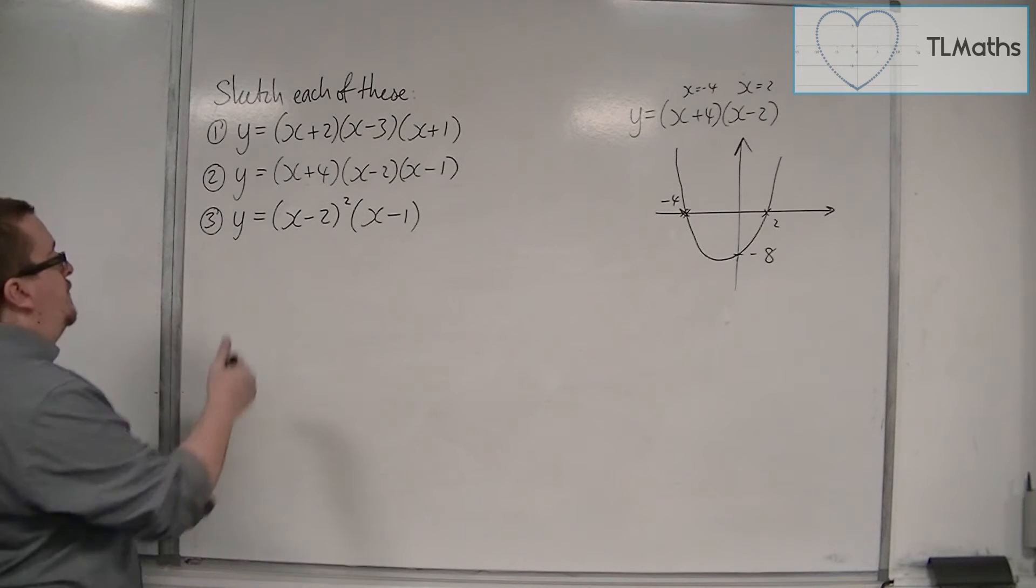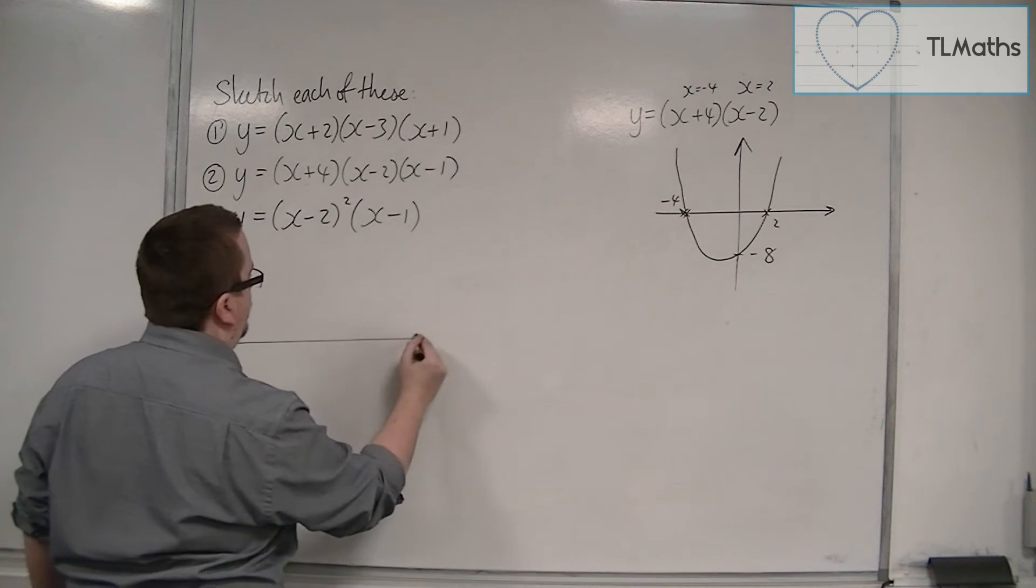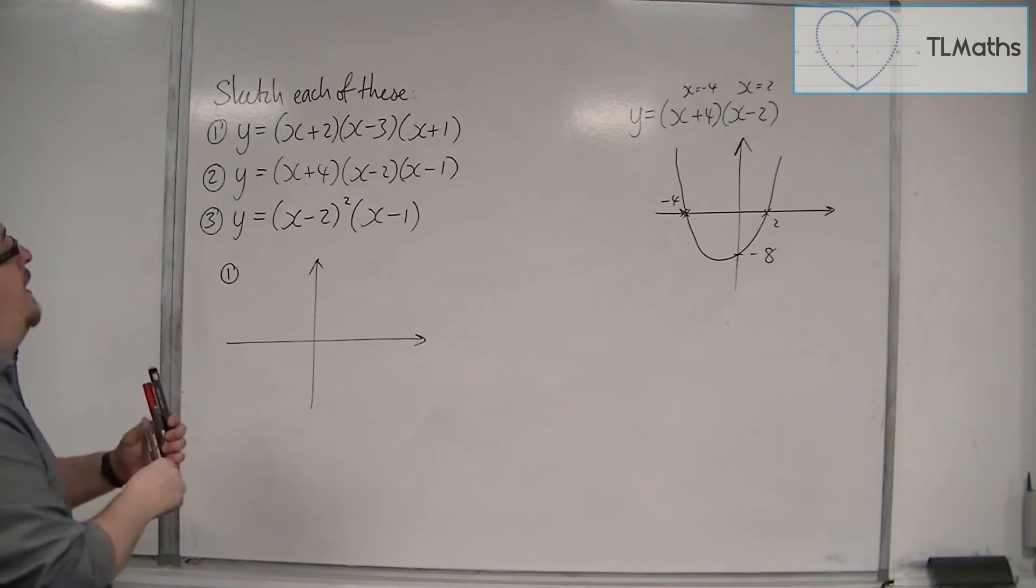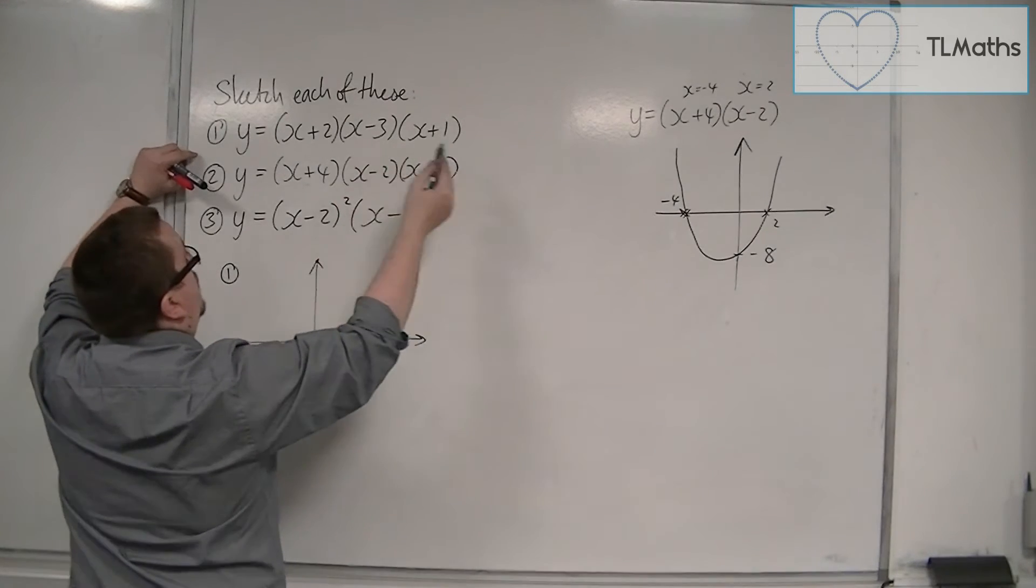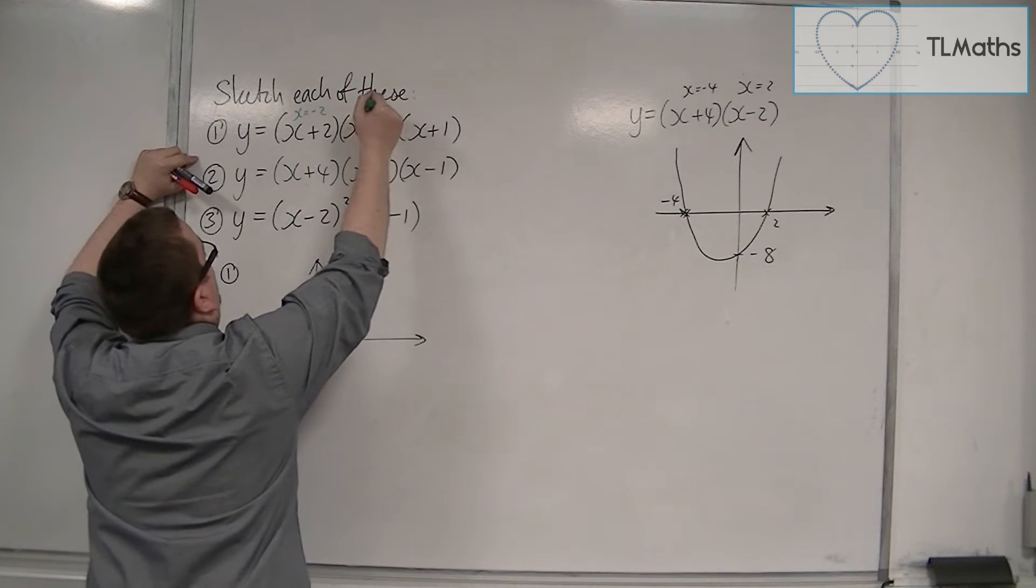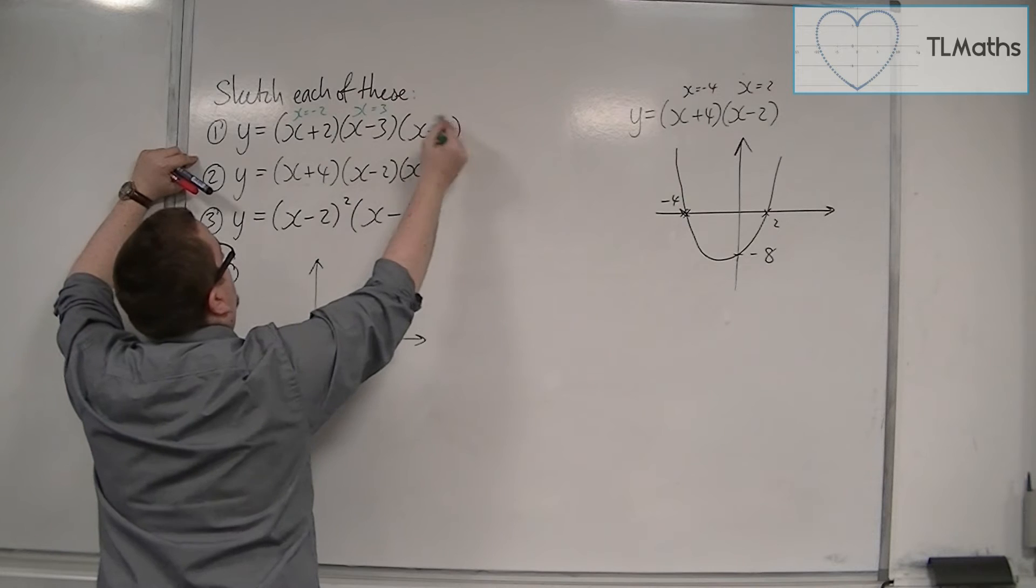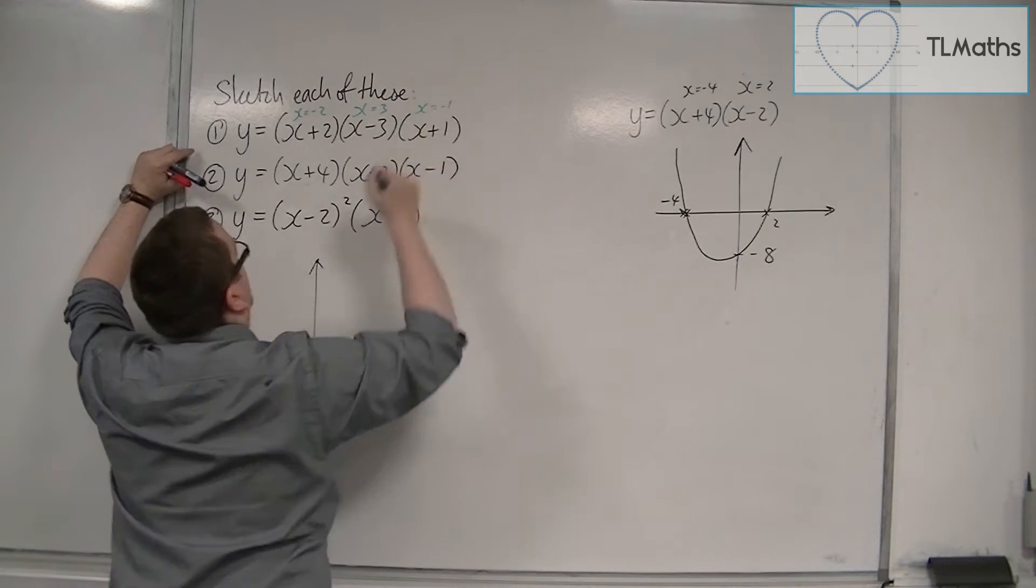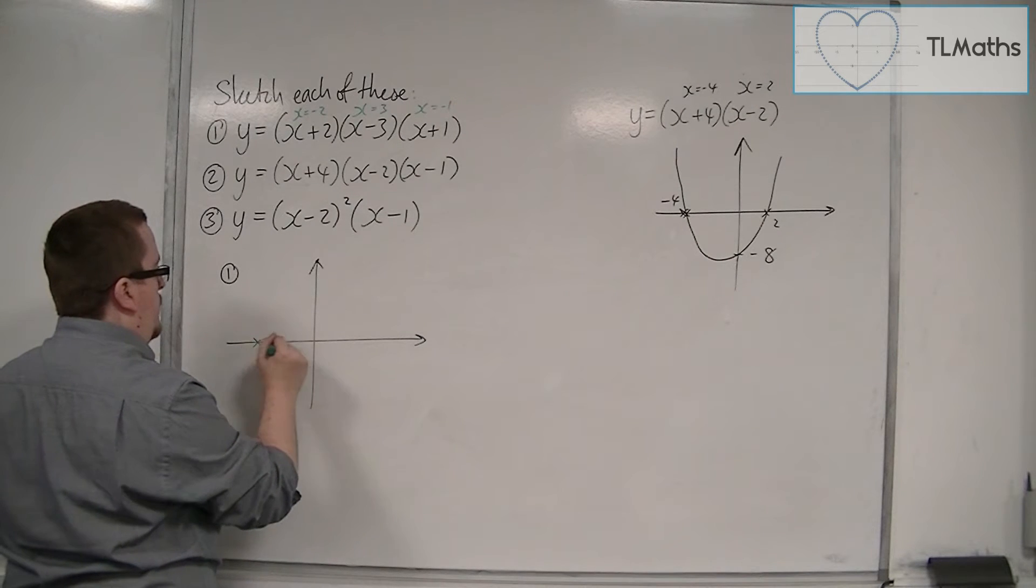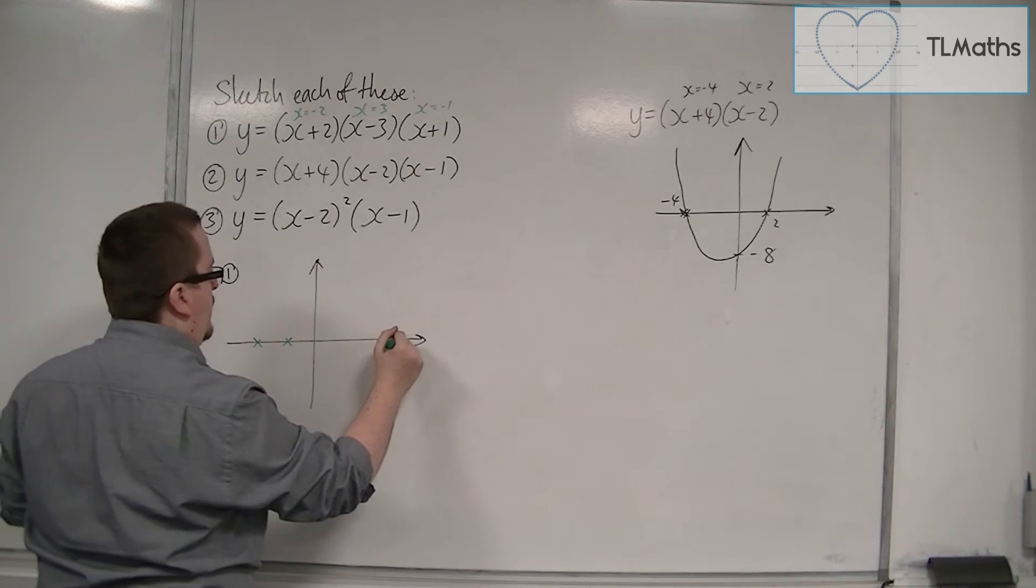So if we look at the first one, in the same way, we can identify that this curve must be crossing the x-axis at minus 2, positive 3, and minus 1.